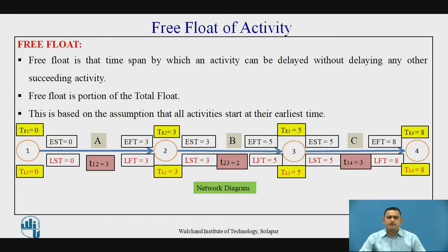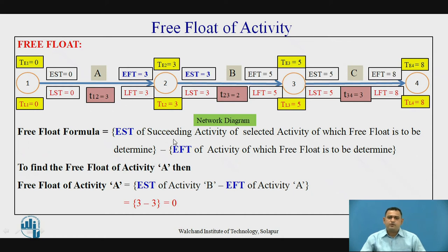Free float is the time span by which the activity can be delayed without affecting the succeeding activity. It is a portion of the total float. The formula is: EST of the succeeding activity minus EFT of the activity for which the free float is to be determined. Free float of activity A equals EST of activity B minus EFT of activity A, that is 3 minus 3, which equals 0.